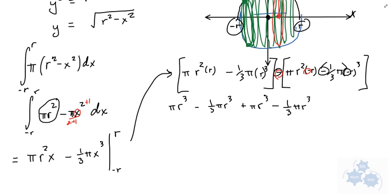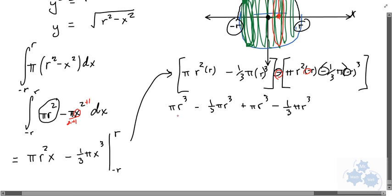So assuming I haven't written anything incorrectly here, let's try and simplify this now. I've got pi r cubed minus one third pi r cubed. This negative here and this negative, they're going to cancel each other out. So it's going to be plus pi r cubed. And this negative and this negative are going to make a positive, but this is going to be another negative yet. So it's going to be minus one third pi r cubed.